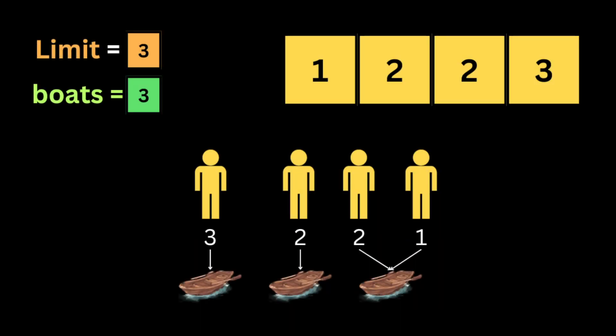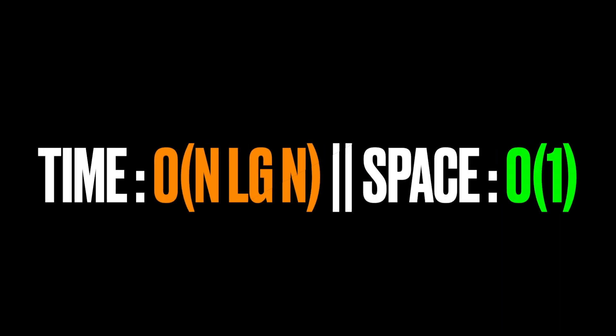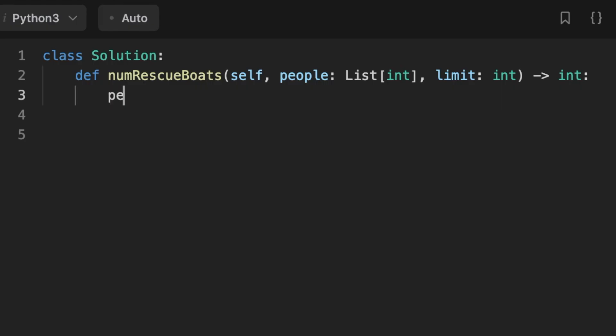The time complexity for this solution is O(n log n) because we sort the array, and sorting takes O(n log n). In complexity analysis we drop the less significant term, which is O(n) for the loop. The space complexity is O(1) since we are not allocating any additional memory.